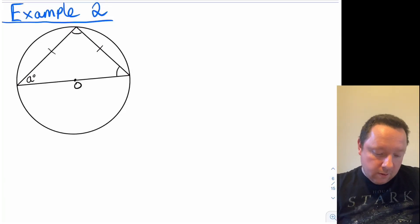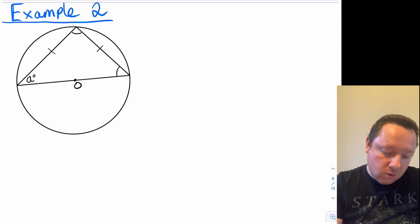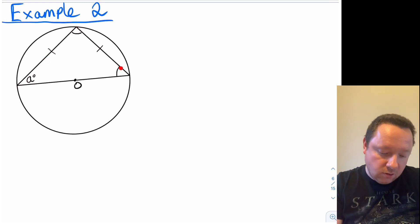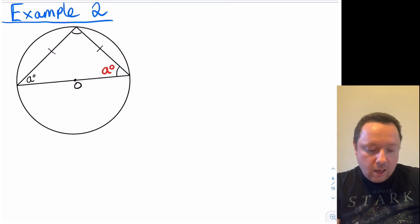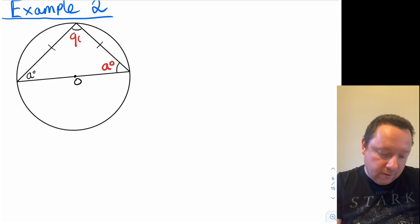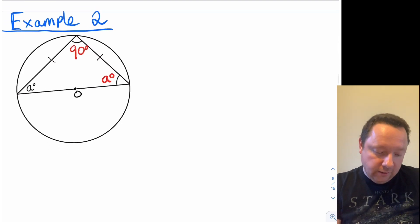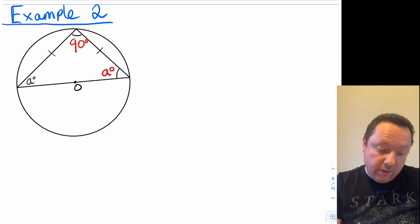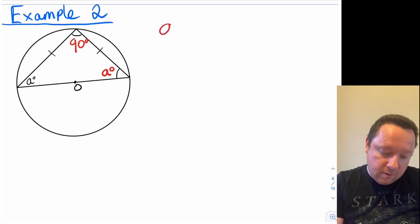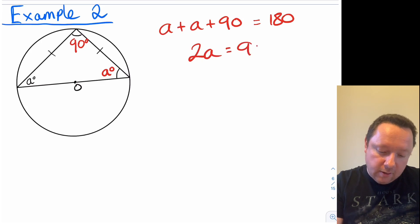Example two: we have to work out the size of angle a. These little dashes on this line are telling you that these sides are the same size, so it's making an isosceles triangle. So the working for this — this angle would also be a. We also know that the top angle here is 90 because of the rule: angles in a semicircle are 90 degrees. So now it's very easy: a plus a plus 90 must equal 180.